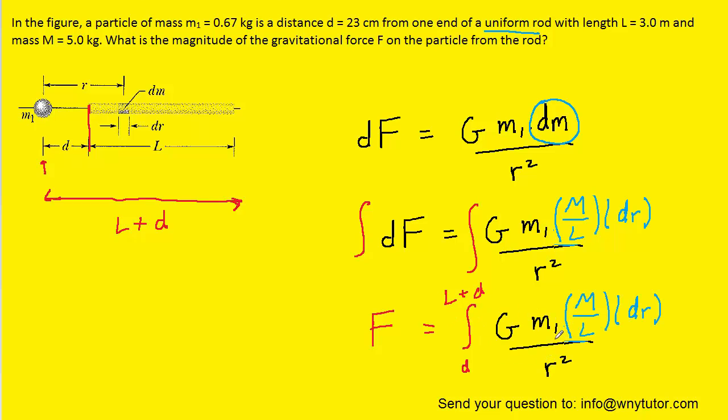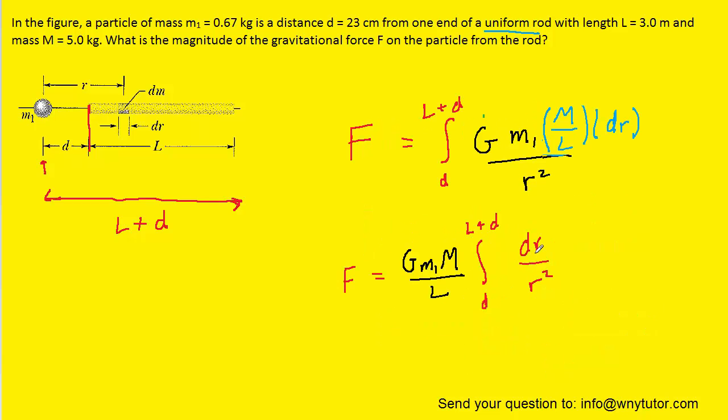So, here is the integral that we need to compute. But before doing so, we can remove any constants. We know that capital G is a constant, m1, capital M, and L are also constants. So, we're going to be able to remove this term right here in the green circle to the outside of the integral.